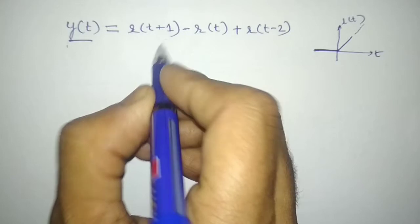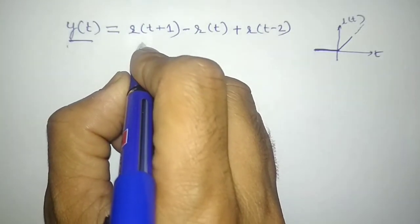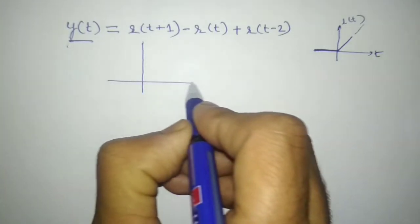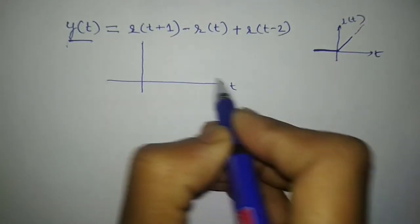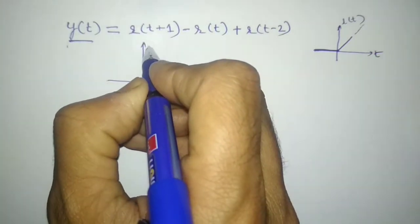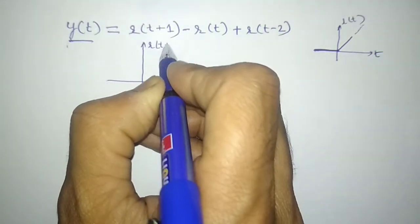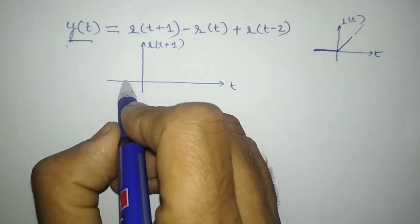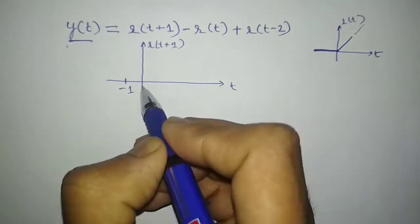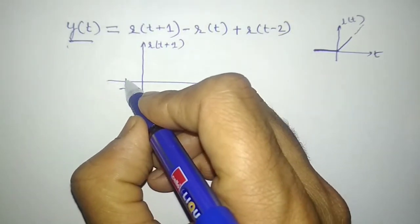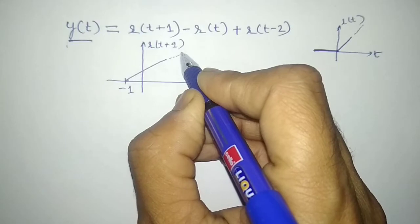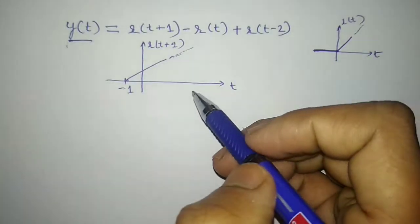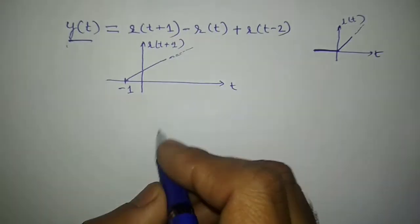Let me sketch r(t+1) by drawing the y-axis and x-axis. This is time t, and this signal is r(t+1). The signal has been shifted to the left by 1. The shape of the signal remains the same; only it has been shifted to the left by minus 1.